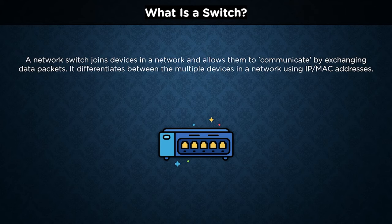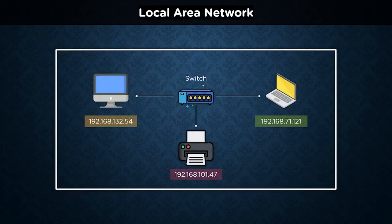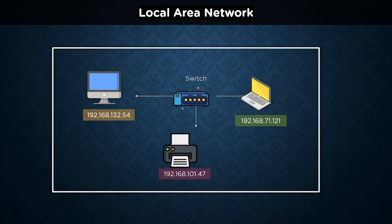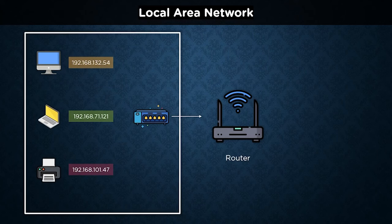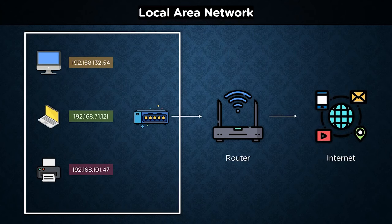Based on the type of switches employed, they can differentiate between network devices using either their IP addresses or MAC addresses, which are separate types of addresses allotted to each hardware device irrespective of the network it is connected to. Now that we understand the major parts of a local area network, a key question is: how can these local networks communicate with other networks? A router is employed at the forefront of every network setup to facilitate communication between foreign networks, and can be used to connect to the internet.